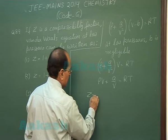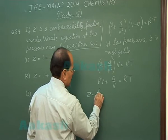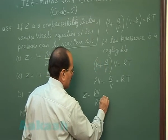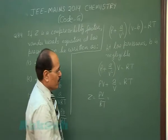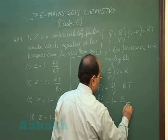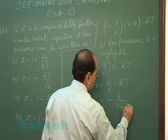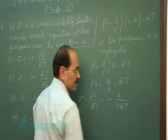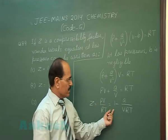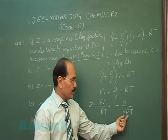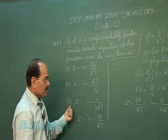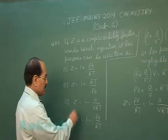Therefore, Z = pV/RT = 1 - a/VRT. So at low pressures, the compressibility factor is given by the expression Z = 1 - a/VRT. Option three is the correct answer.